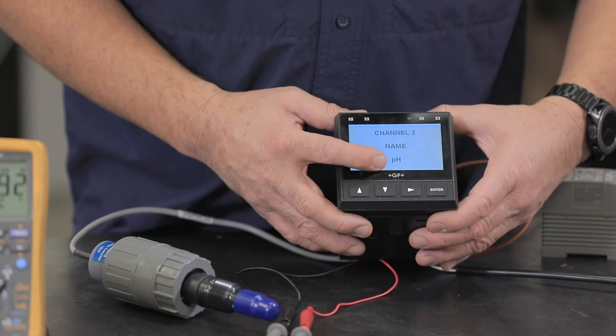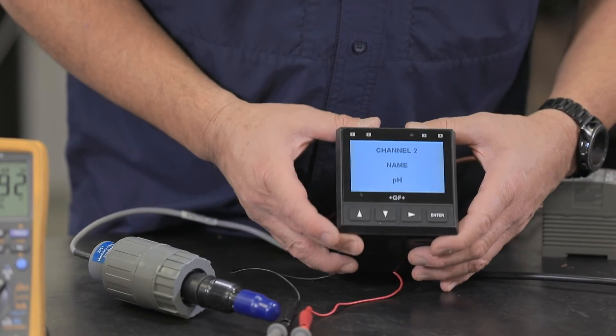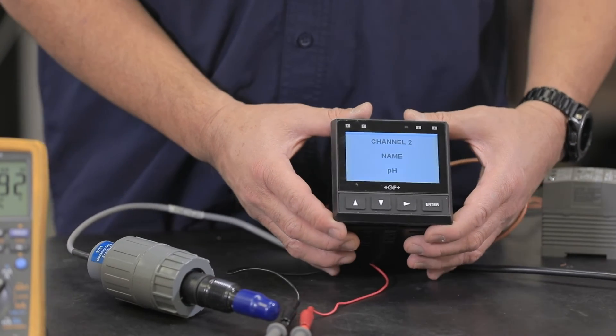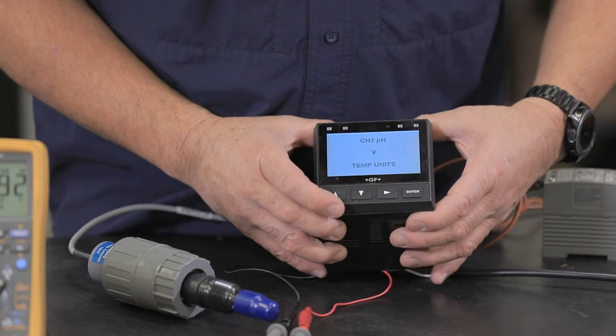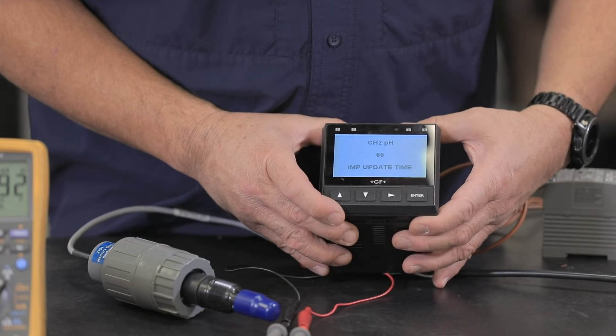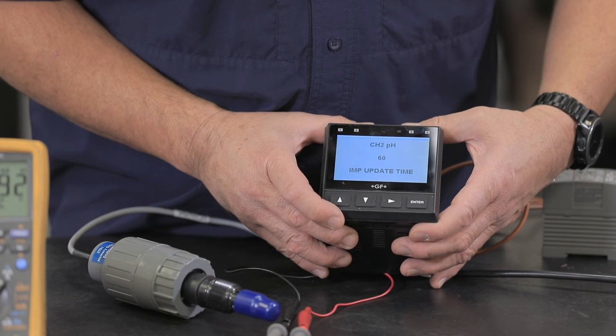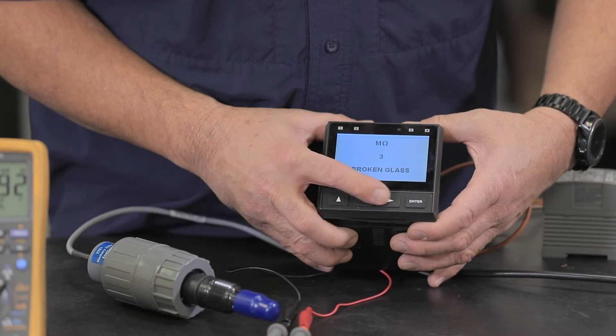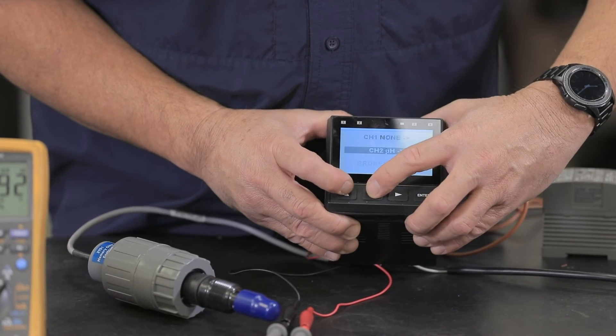Okay, so channel one name is pH. In the future we can change that, we can call that a cooling tower or a swimming pool. Temperature units will be Fahrenheit. Average will be off. Okay, this is my impedance check. So the rest of the settings for pH, but what we want to do is we want to look at the 4 to 20.